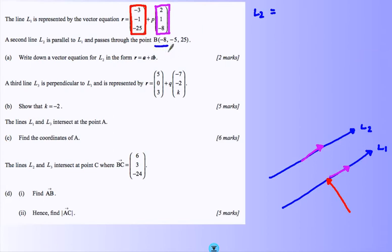New position vector, that's why I've been given this one, so we go to minus 8, minus 5, 25, and then we use multiples of the same old direction vector that we had before because things are parallel. And that's our L2.